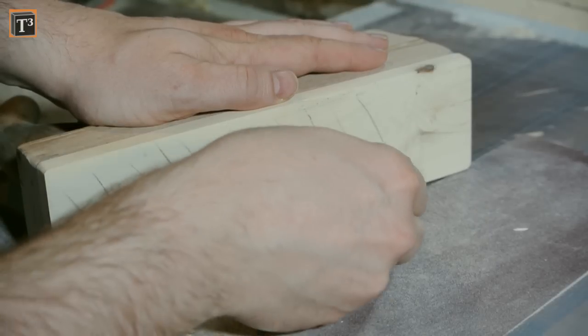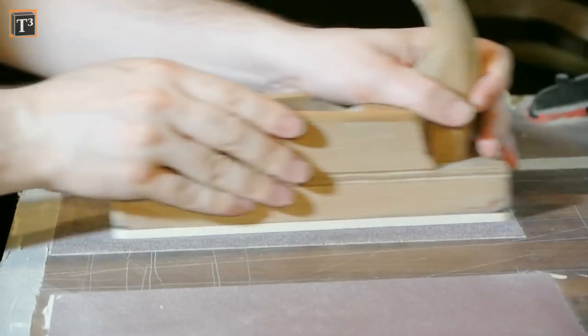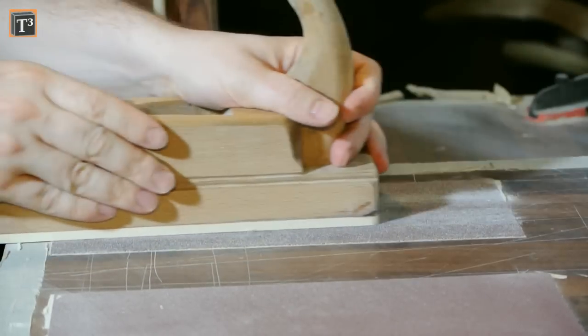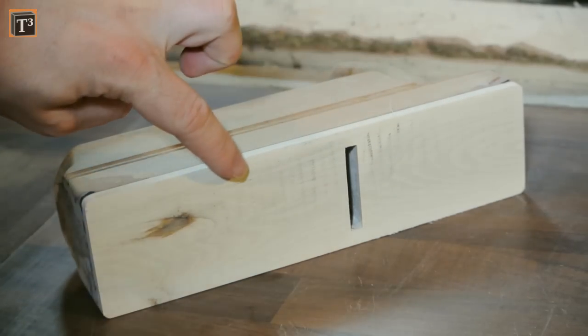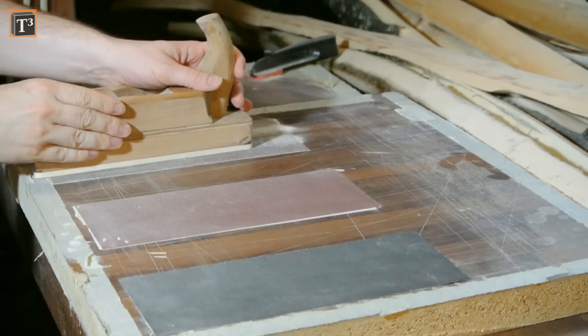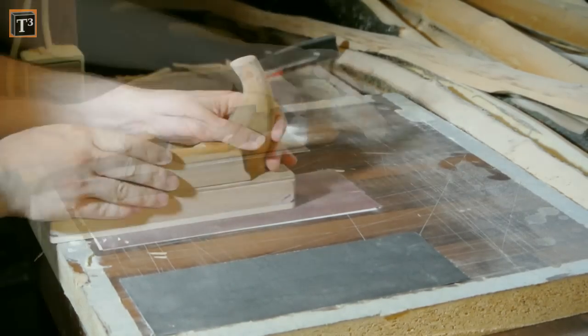The sole is leveled on 80 grit sanding paper and in the following smoothed with 120 and 240 grit paper. I also used the chance to smooth the sides.